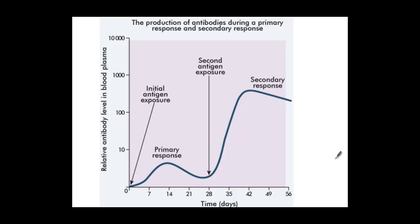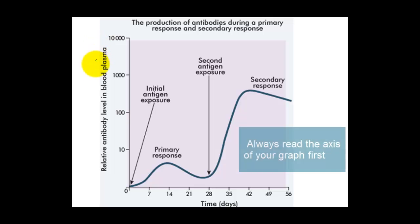What we're going to have a look at here is our graph of our immune response. When we think about immunity, we're thinking about the body's ability to not get a disease in the future. Let's have a look at our graph, and the first thing we'll do is have a look at what the axes have on them.